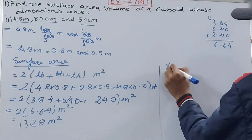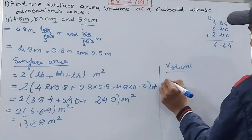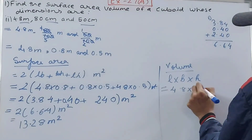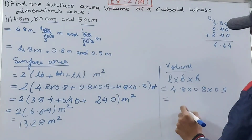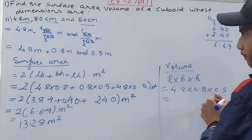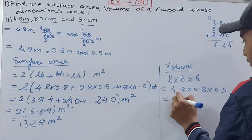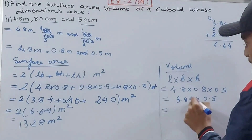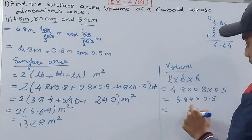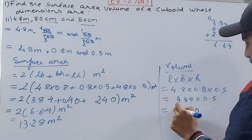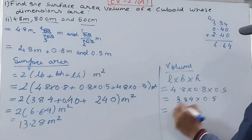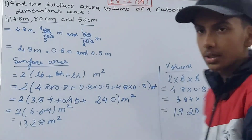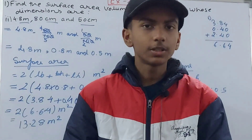Now the volume: Volume = length × breadth × height = 4.8 × 0.8 × 0.5. We already know 4.8 × 0.8 = 3.84, so 3.84 × 0.5 = 1.92 cubic meters. That is your volume for part two.